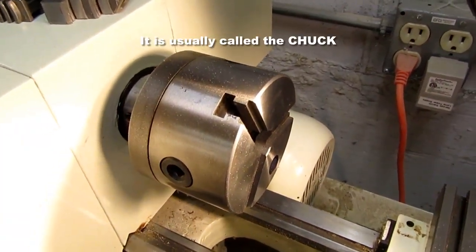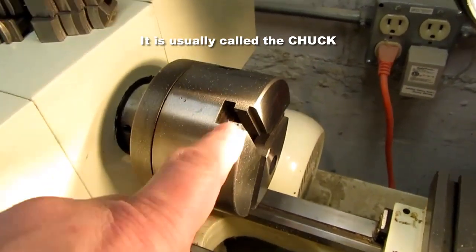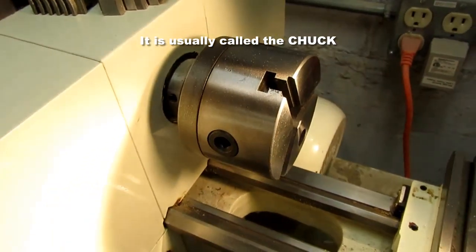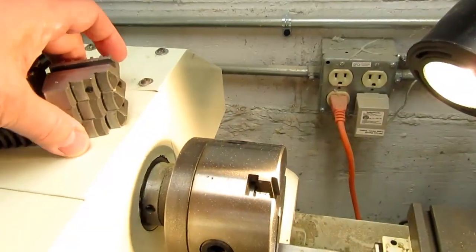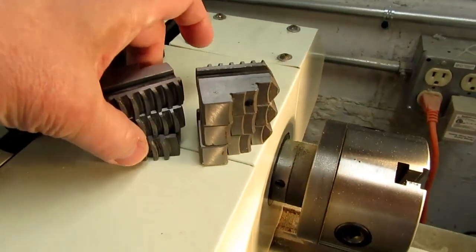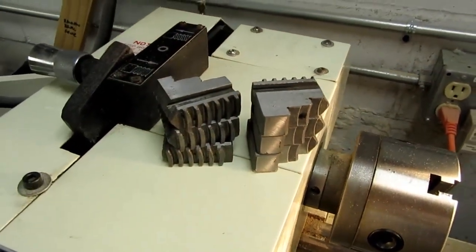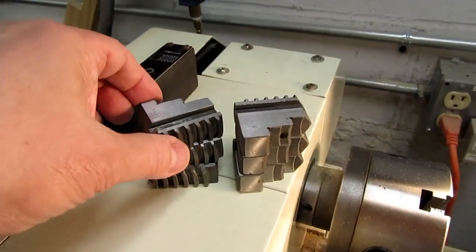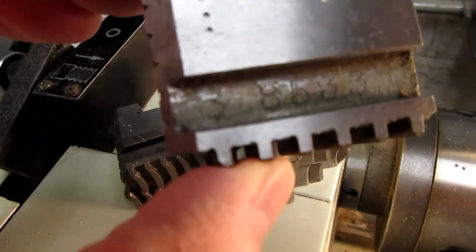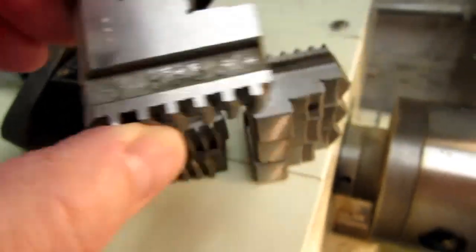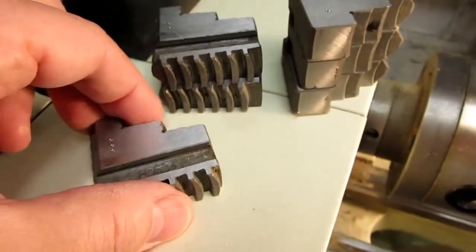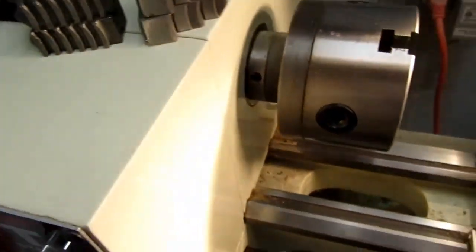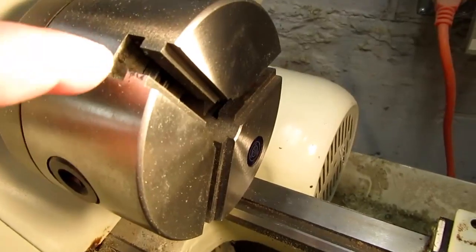This part I'm going to call it the chuck. I've got a set of inner and outer jaws. They're sort of numbered down there - that says a three on the left hand side, that one says a two, the other one says a one.